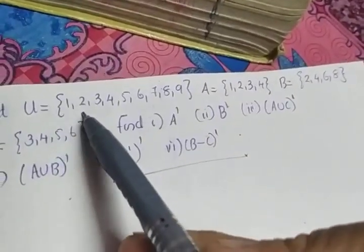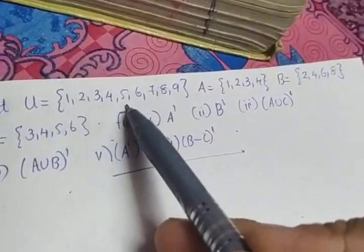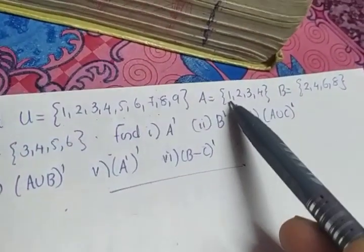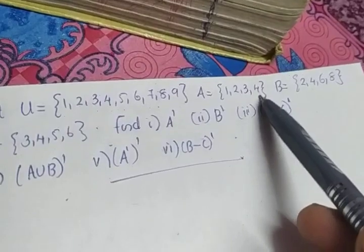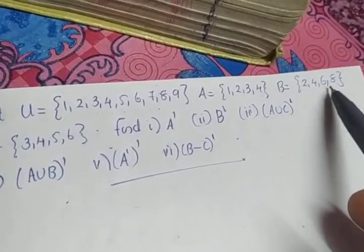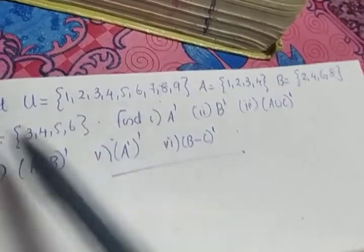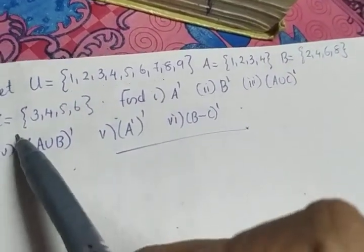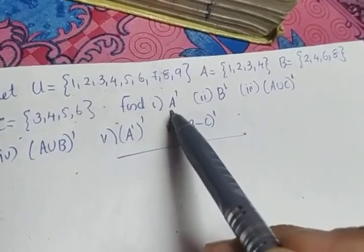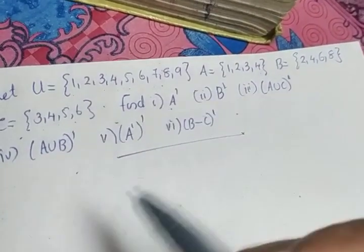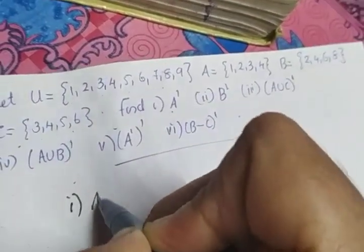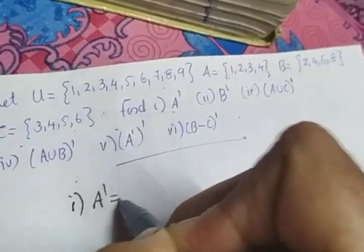U is given as {1,2,3,4,5,6,7,8,9}. A is given as {1,2,3,4}. B is equal to {2,4,6,8}. C is also given as {3,4,5,6}. The first question is to find A dash (complement of A). How we will find A dash is to subtract the elements — strike off the elements of A from U.